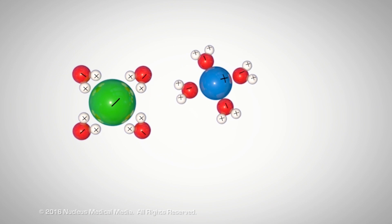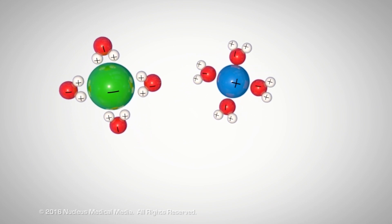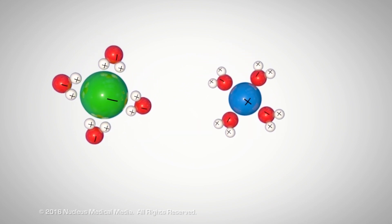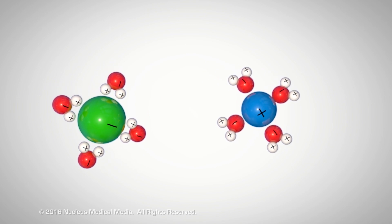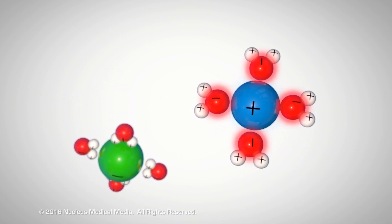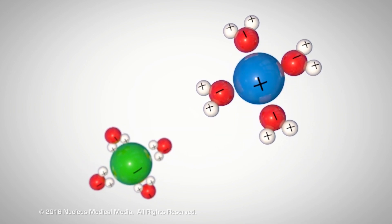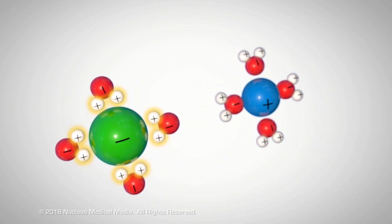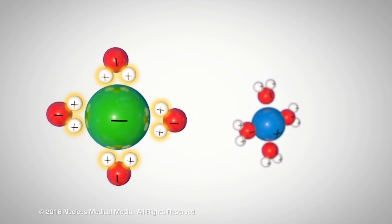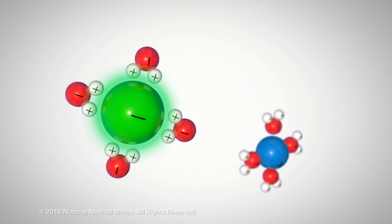Water does this by separating the compound into negatively and positively charged particles called ions. The negative poles of water molecules surround the positive ion from the compound, and the positive poles of water molecules surround the negative ion from the compound.